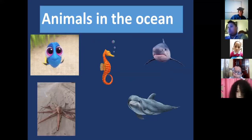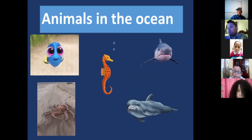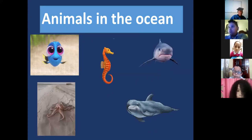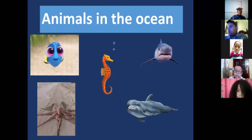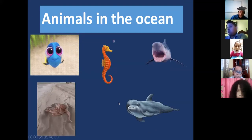Animal in the ocean. Fish, octopus, a whale, dolphin, shark, and seahorse. All right.